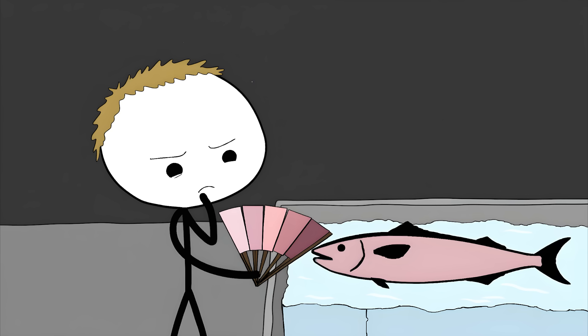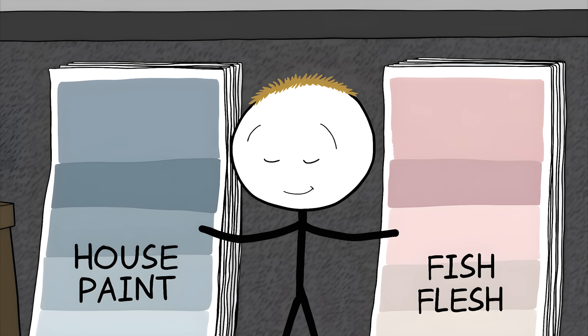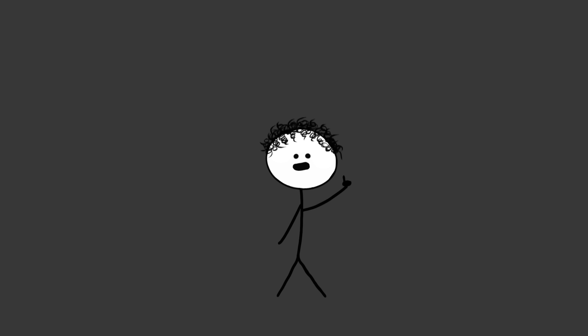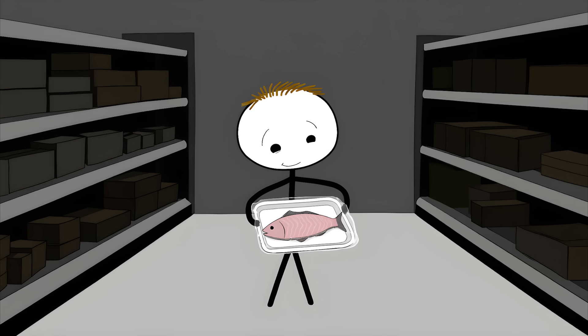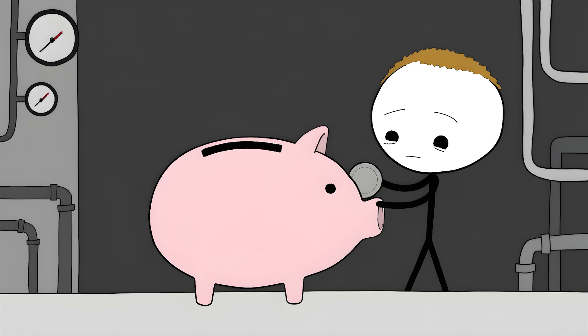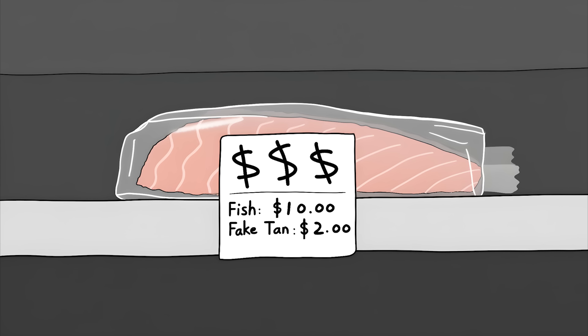Farmers can actually choose what shade of pink they want their salmon to be. They use something called the salmofan. Think of it like those paint sample cards you get at the hardware store, but for fish flesh. Different markets prefer different shades. The Japanese market likes a really deep red, while Americans often prefer a more subtle, lighter pink. This artificial coloring can add up to 20% to the cost of raising salmon. You're paying extra for your salmon's fake tan.